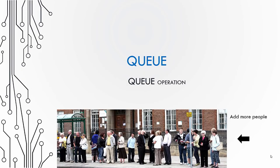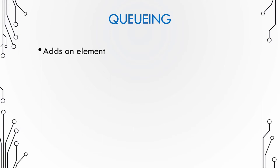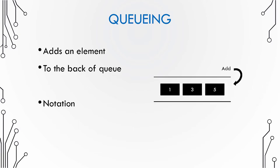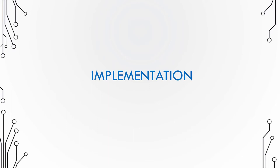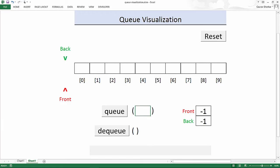Let us look at how we add new elements to a queue. Enqueuing adds a new element to the back of the queue. In an array implementation of a queue, we have two pointers: a front pointer storing the index of the first element, and a back pointer storing the index of the last element. Since the queue is empty initially, both are pointing to minus one.